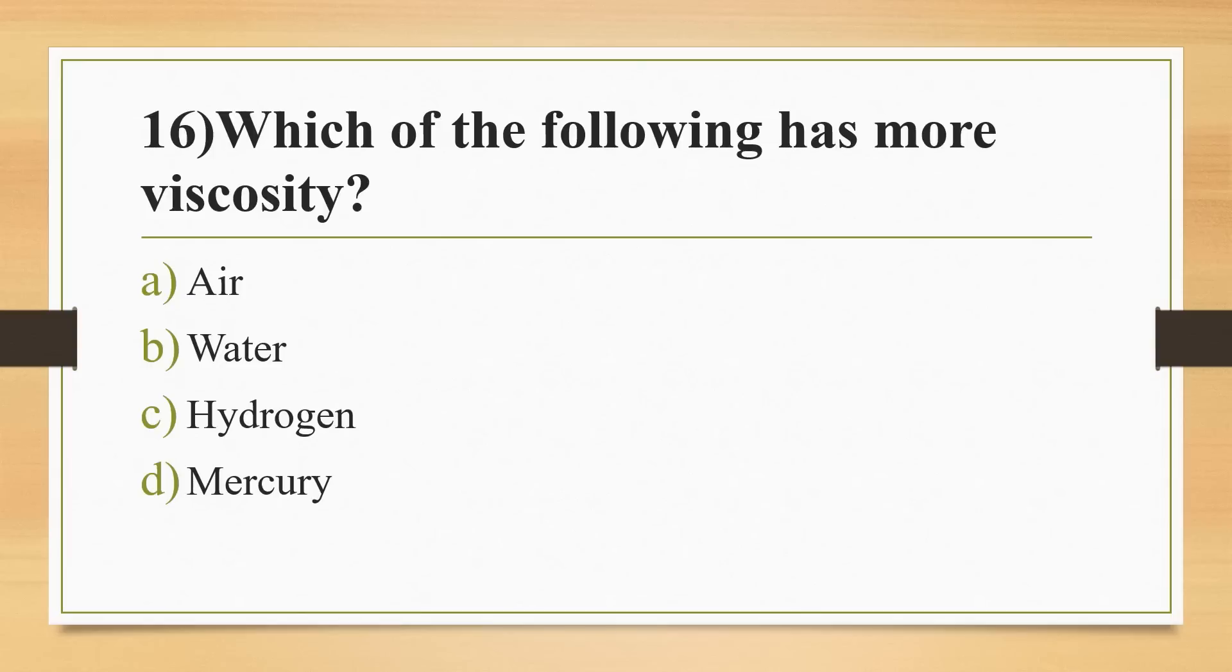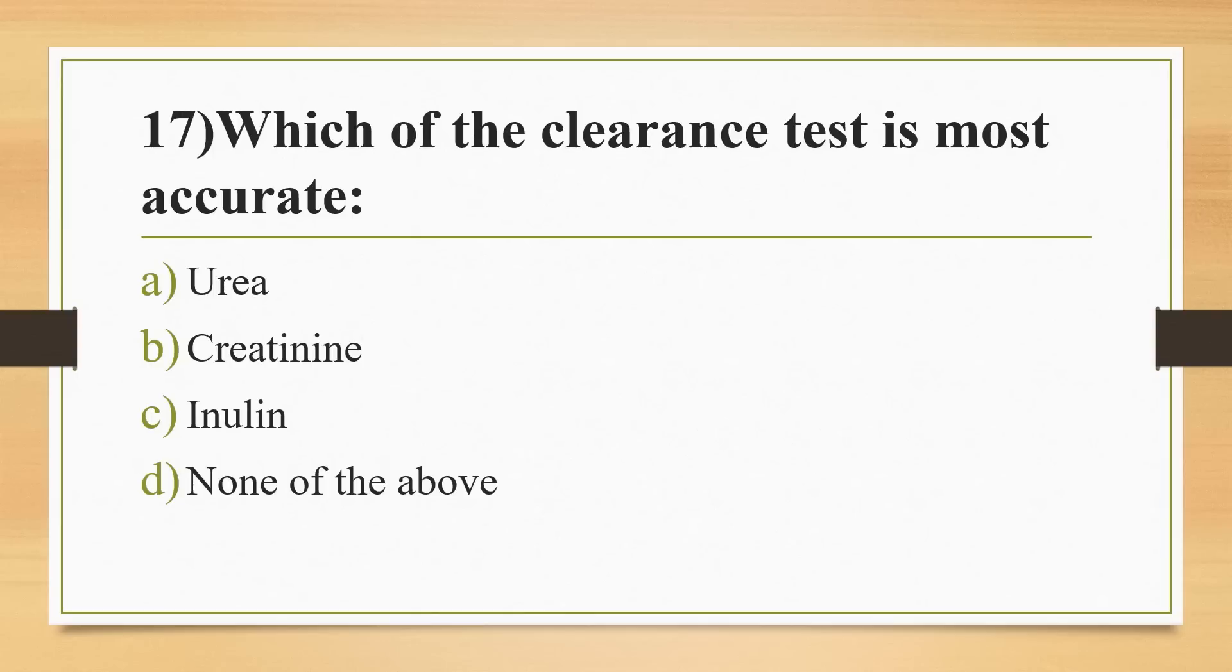Sixteenth question: which of the following has more viscosity? Options: air, water, hydrogen, or mercury. Answer is Option D, mercury. Mercury has the more viscosity. Seventeenth question: which of the clearance test is most accurate? Options: urea, creatinine, inulin, or none of the above. Answer is Option C, inulin.